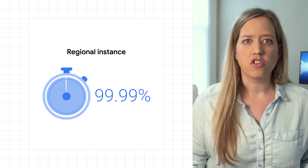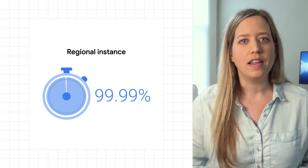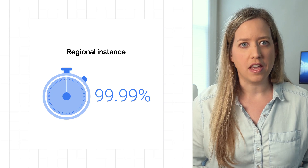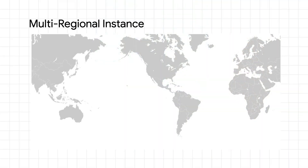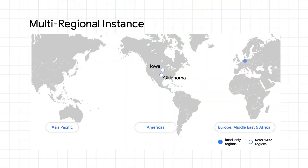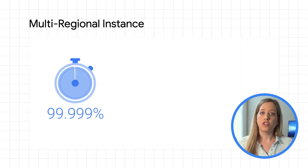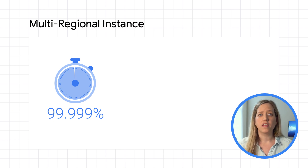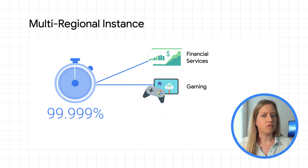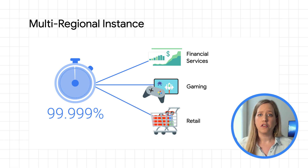Regional Spanner configurations support up to four nines — 99.99% availability — for mission-critical applications. While very unlikely, a region can be a single point of failure, for example in a natural disaster. So Spanner also offers multi-region configurations, spreading data over geographically dispersed locations using Google's dedicated network. By spreading replicas over multiple independent regions, a multi-region configuration can achieve up to five nines of availability — the level needed for the most demanding uptime requirements such as financial services, online gaming, and retail.